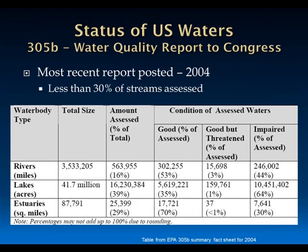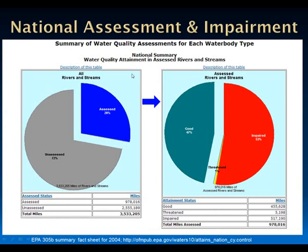Thinking about the status of U.S. waters, the 305B report is what states send to Congress every year, which includes the 303-D list of their impaired water bodies—those not meeting beneficial use standards. At the national level, the EPA combines those together for a status of national waters. The most recent time this was compiled was 2004. At that point, less than 30% of streams had been assessed—only 28% assessed—meaning we only have complete information for those water bodies. Of those assessed, more than half were not meeting all their beneficial use standards, meaning one or more uses were impaired.